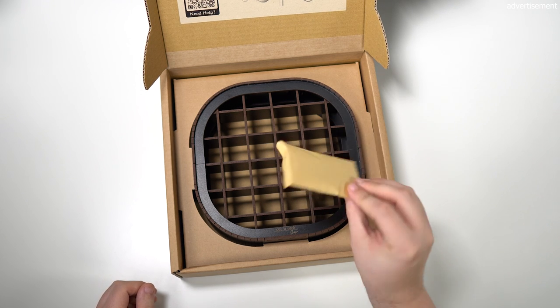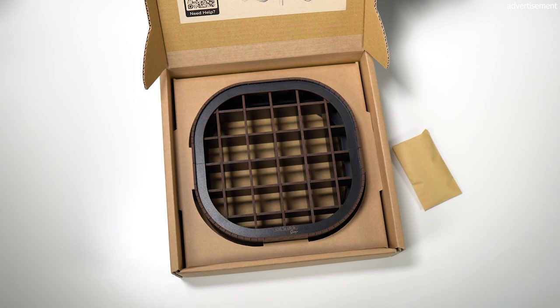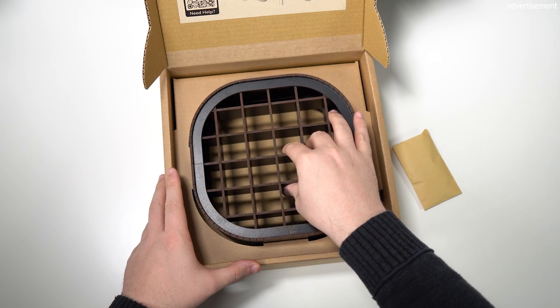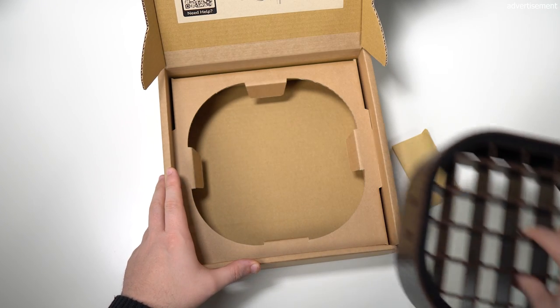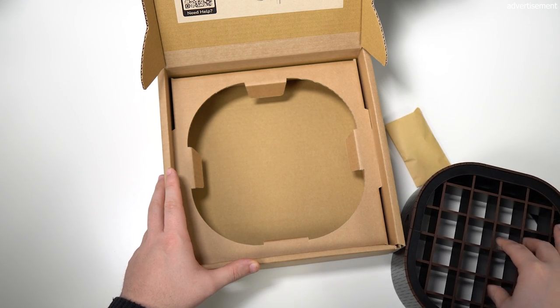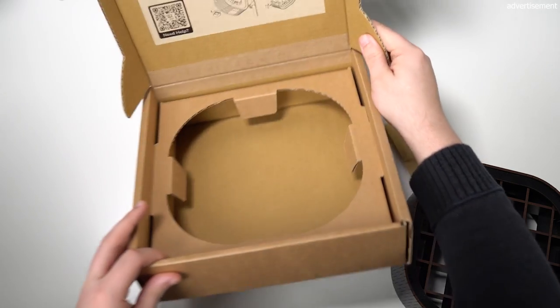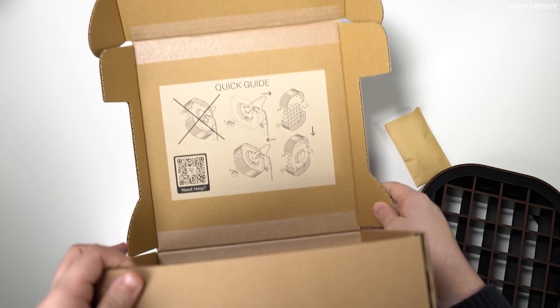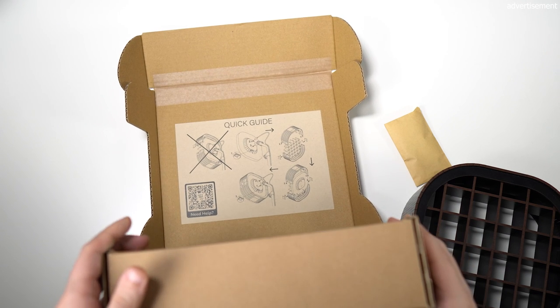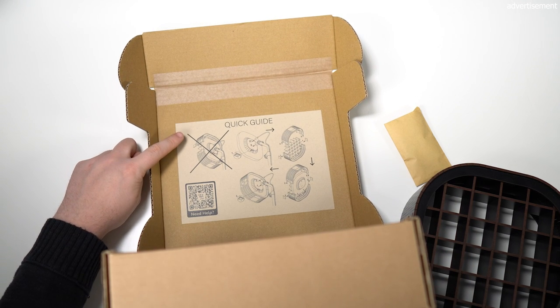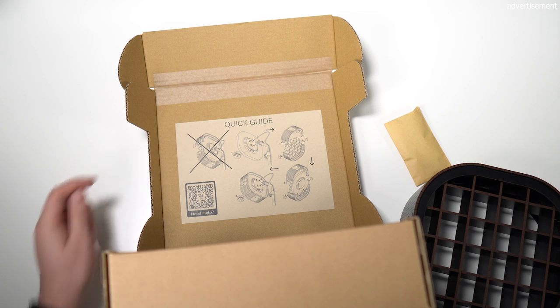So let's put it aside for now and I'll also take out the grid for the time being because before we start assembling I want to take a look at the quick guide here on the underside of the lid. It shows us similar to an IKEA instruction manual in very simple steps what we need to do to mount the attachment.